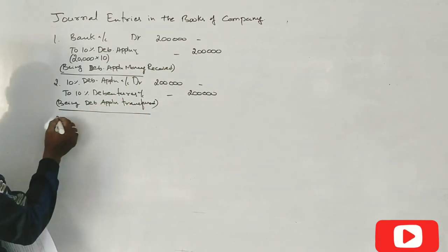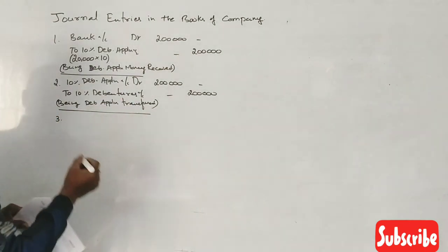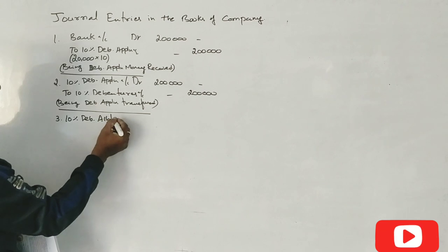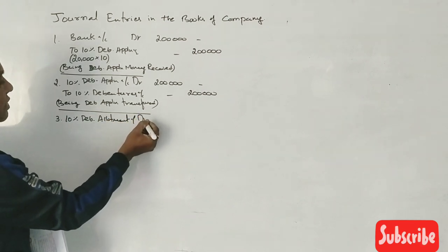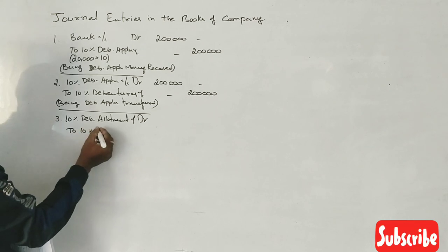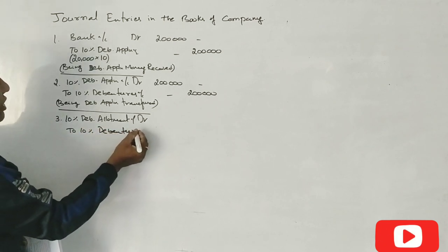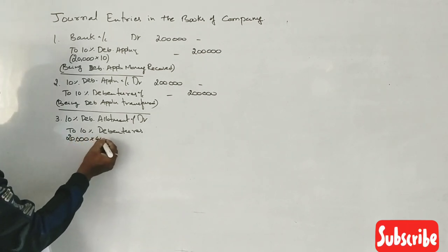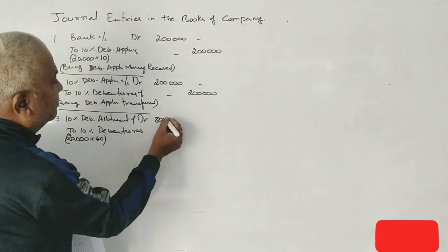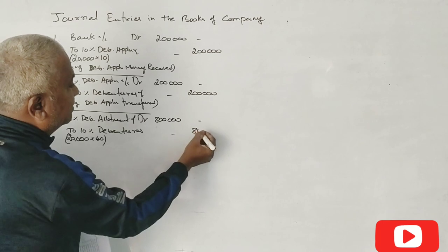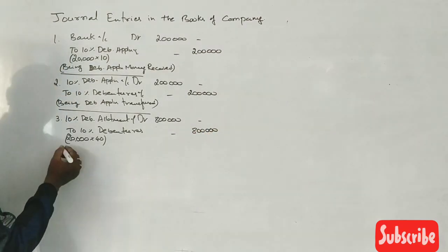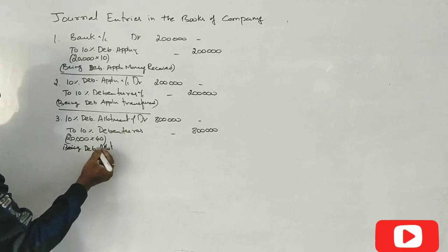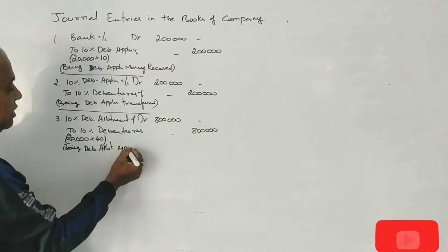Third point, allotment: 40 rupees debt. 10 percent debenture allotment account debit to 10 percent debentures account. So it is the due and the cost payment, 20,000 into 40 rupees is 8 lakhs. Being debenture allotment money due.